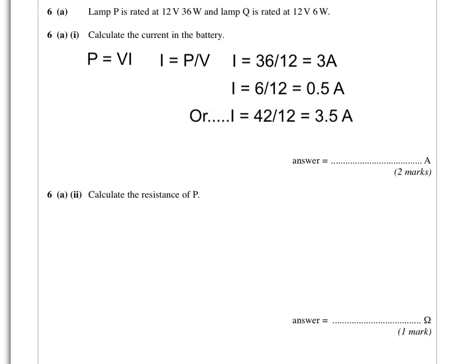The next question asks us to calculate the resistance of P. We know quite a lot about lamp P - it's 12 volts, 36 watts, and we know the current. There are various formulas you could use. Because I worked out the current earlier as 3 amps, I'll use V equals IR, rearranged to R equals V divided by I. 12 divided by 3 gives us a resistance of 4 ohms.